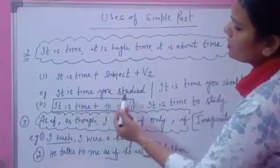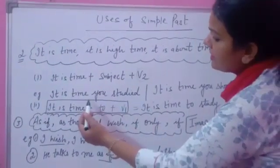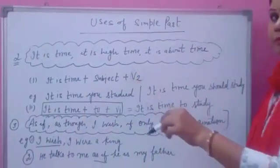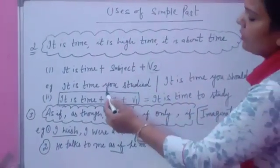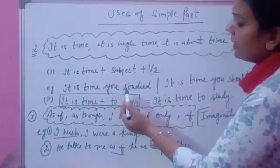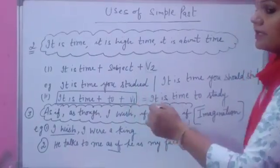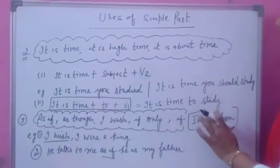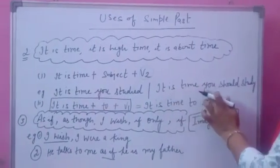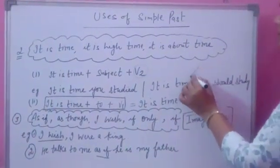For example, it is time you studied. It means that the sentence is saying that you had the time but you didn't use that. That's why we are giving you advice. It is time you had studied. It means that time has gone now. But many of the students write here, it is time you should study. The sentence will be wrong.